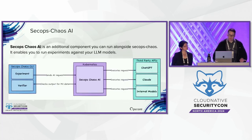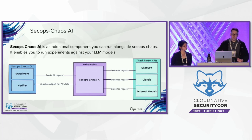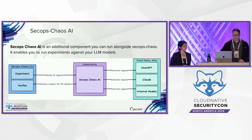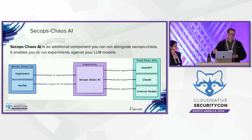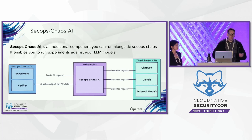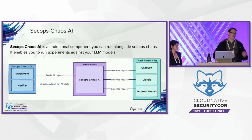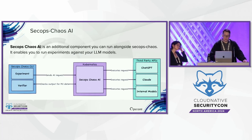SecOps Chaos AI is an additional component you can run alongside SecOps Chaos. It enables you to run experiments against your LLM models. For example, if your product team has introduced new AI functionality and you want to verify it can't leak PII data, you could write a bunch of experiments with different prompts and try to get it to leak PII data from your LLM. You can run it against third-party APIs or even internal models.